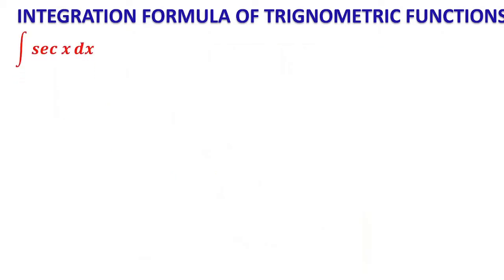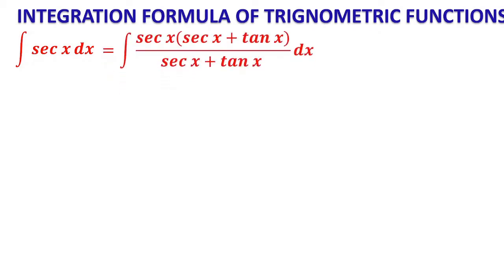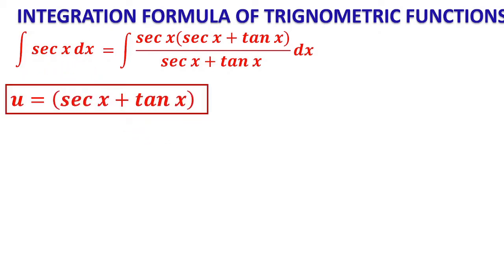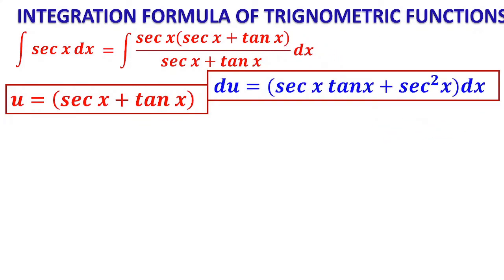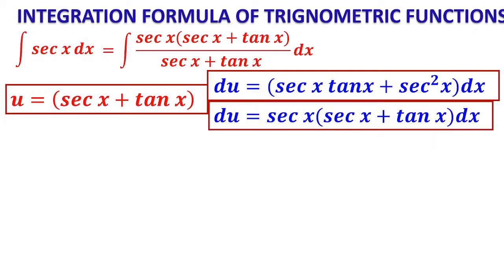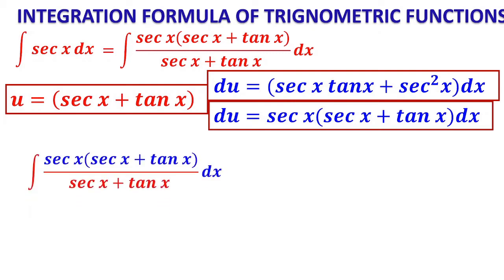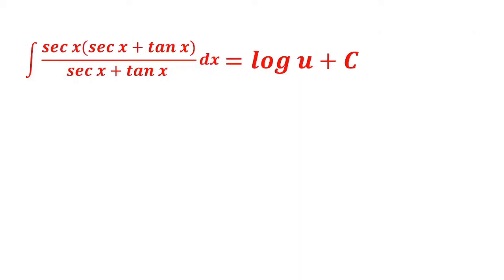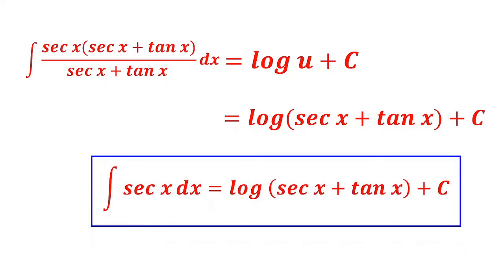For ∫sec x dx, writing it as 1/cos x is of no direct use. Instead, we multiply and divide by (sec x + tan x). We then see that the differentiation of (sec x + tan x), which is sec x·tan x + sec²x, appears in the numerator. Taking u = sec x + tan x gives du = (sec x·tan x + sec²x)dx = sec x(sec x + tan x)dx. Replacing the numerator by du and (sec x + tan x) by u, we get ∫(du/u) = log|u|, so ∫sec x dx = log|sec x + tan x| + C.